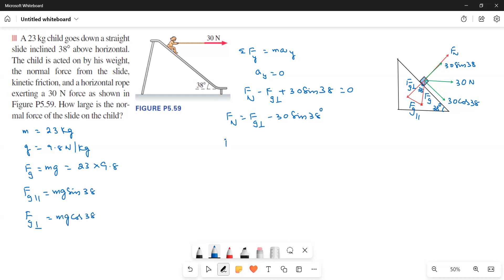Therefore FN is equal to MG cos 38 minus 30 sin 38 degrees. Therefore, this is equal to 23 into 9.8 into cos 38 minus 30 sin 38. Therefore, FN is equal to 159.14 N.